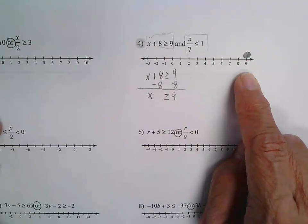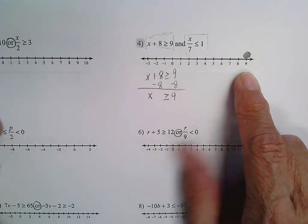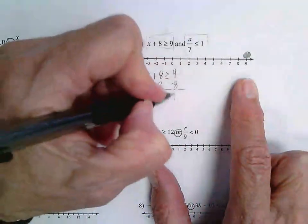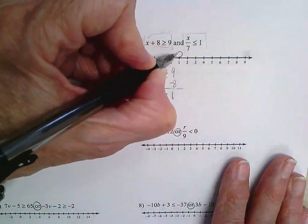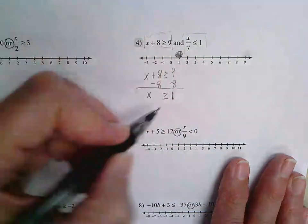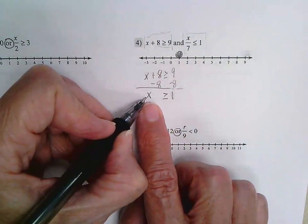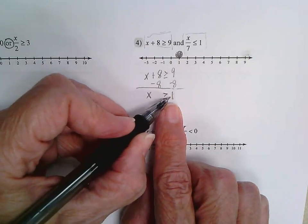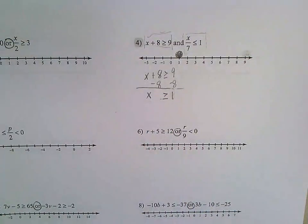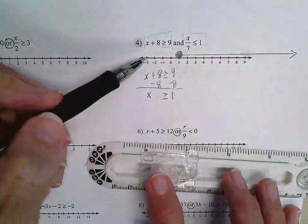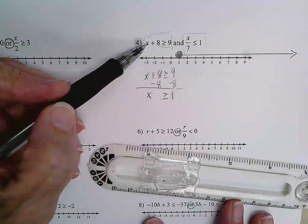Actually, I did my math wrong — the answer is X greater than or equal to one. So I'm going to fill in my circle at one, and I want to think about where the values would be for X that are greater than or equal to one. They would be to the right of the circle, so I'm going to draw an arrow going to the right. That's the inequality for the left-hand side.